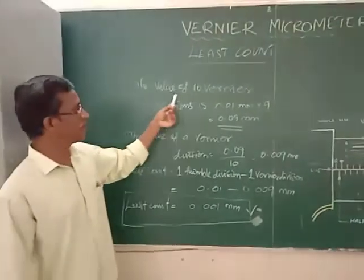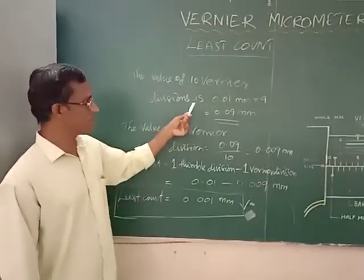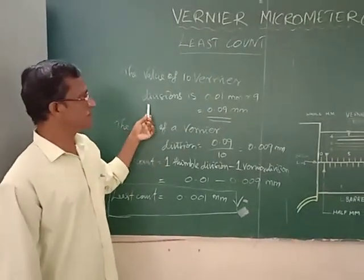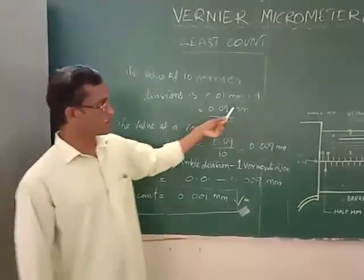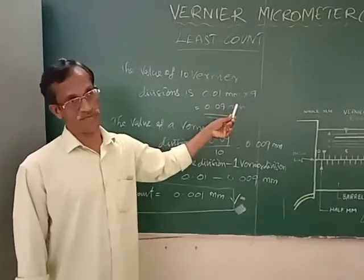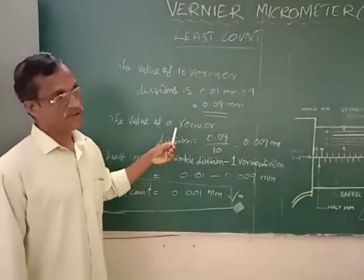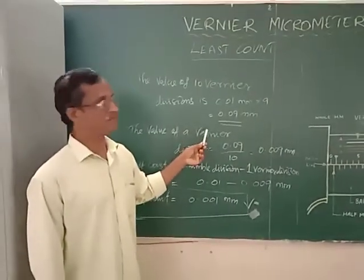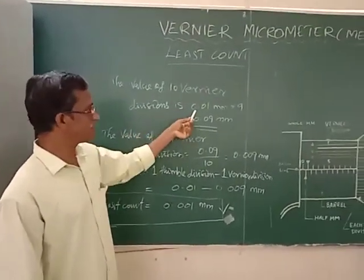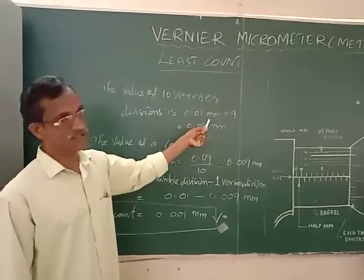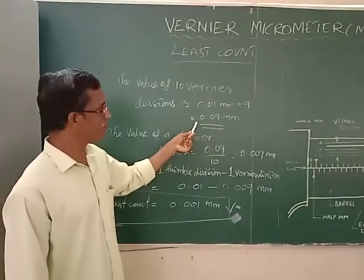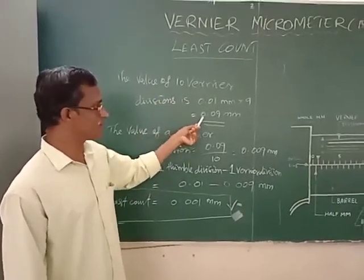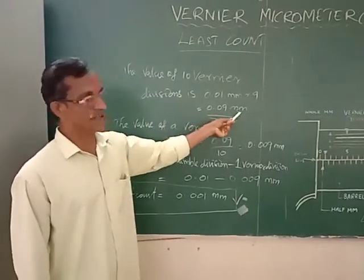The value of 10 vernier divisions is 0.01 mm. That means the value of 10 vernier divisions is 0.01 mm. Then the value of 10 vernier divisions is 0.09 mm.